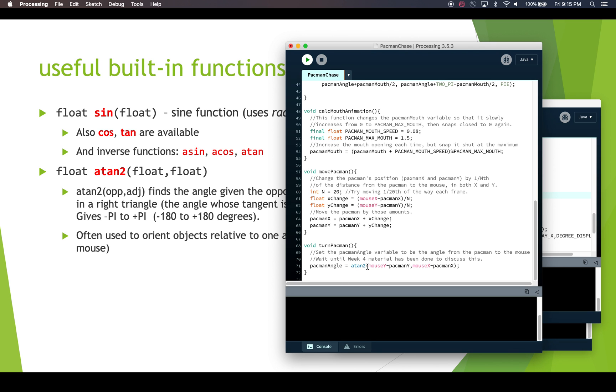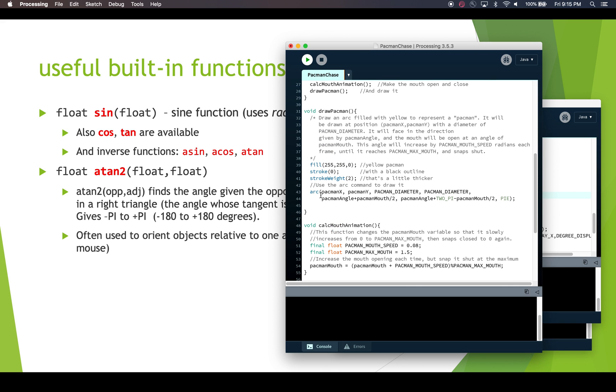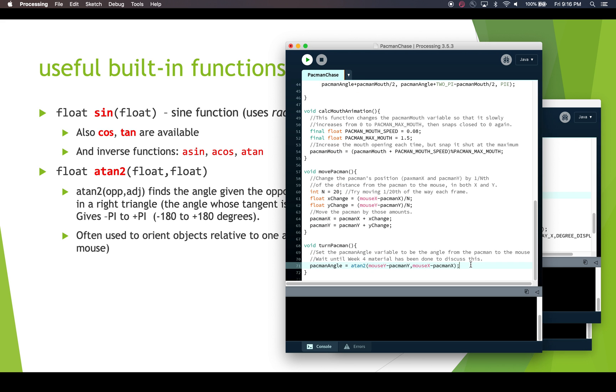If we go down to turn Pac-Man, here we have our atan2 function. It is taking the difference between where the mouse is and where Pac-Man is on the y-axis and the difference on the x-axis, passing that into atan2 and giving us an angle. Then the angle is being used in our arc function, which is what we're using to draw Pac-Man. It takes the position, the diameter, and then two angles because we need to specify where the mouth opens and closes, then pi is saying fill that in. We're using the angles here and doing some Pac-Man mouth animation. But the angle is in here and that is what is determining which way Pac-Man is facing, using this atan function.